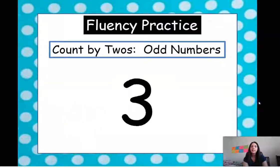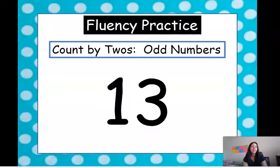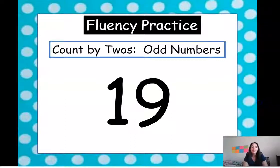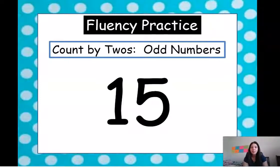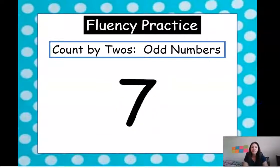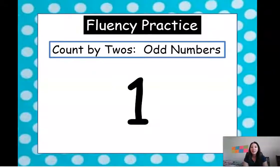1, 3, 5, 7, 9, 11, 13, 15, 17, 19. Now we're going to go backwards. 19, 17, 15, 13, 11, 9, 7, 5, 3, 1. Nice job. Give me a high five. Nice job, friends.